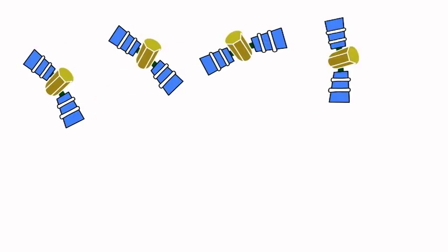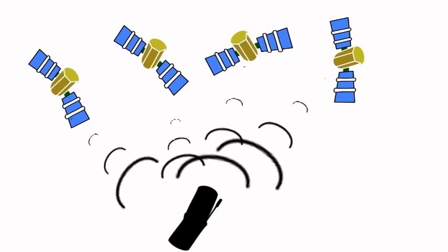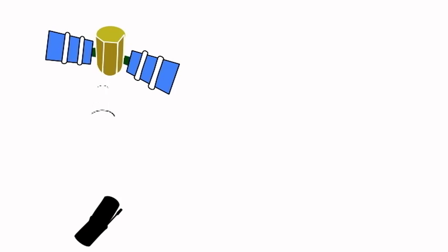In order for trilateration to be used effectively, your phone needs to be picking up on at least three satellites. Four or more is better. Your GPS-enabled phone receives a constantly streaming signal from the satellites, containing information such as